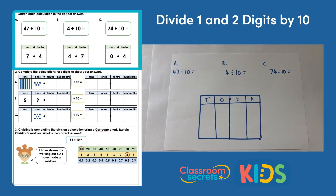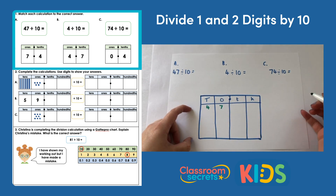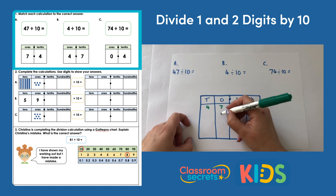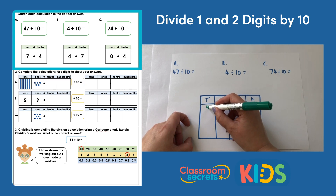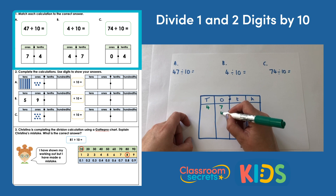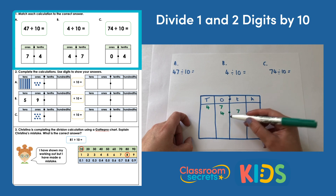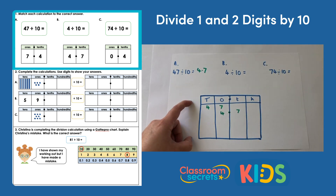We'll start with 47 divided by 10. When we're dividing by 10, the digits move one column to the right and that makes them 10 times smaller. I'm going to show 47 in my grid and move each digit one space to the right. So my seven moves into the tenths column, and my four moves into the ones column. We have the decimal point in the middle and we have 4.7. So 47 divided by 10 equals 4.7.